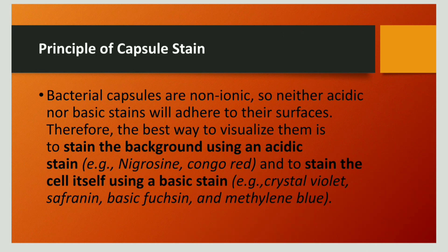Now let us discuss the principle of capsule staining. A bacterial capsule is non-ionic, meaning neither the acidic nor the basic stain will adhere to its surface. So the best way to visualize a capsule is by staining the background as well as the bacterial cell. The background is stained with an acidic stain and the bacterial cell is stained with a basic stain. The acidic stains used for the background include nigrosin and Congo red, whereas the basic stains used to stain the bacterial cell include crystal violet, safranin, and methylene blue.